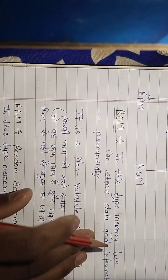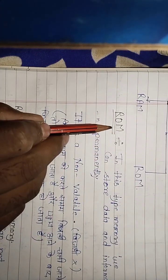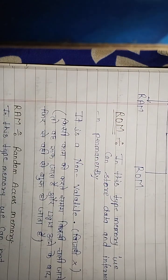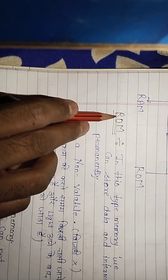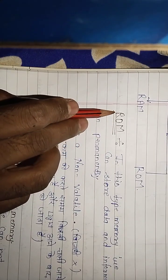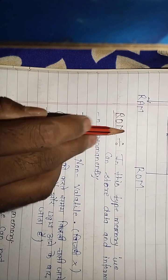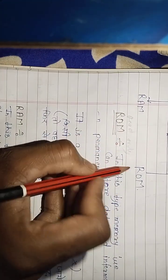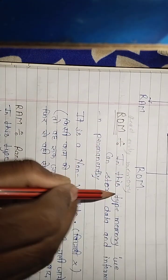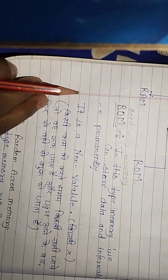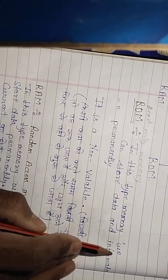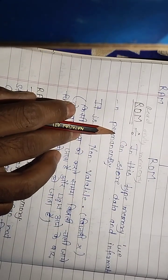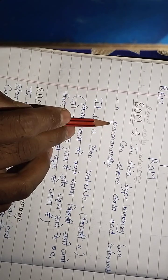What is ROM? The full form of ROM is Read-Only Memory. In this type of memory, we can store data and information permanently. That means ROM is a permanent storage.